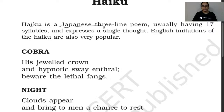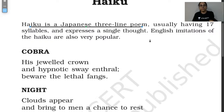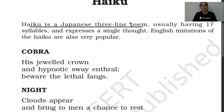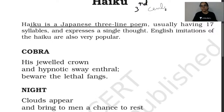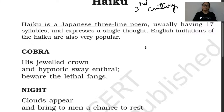Haiku is a Japanese three-line poem, usually having 17 syllables and expressing a single thought. English imitations of the Haiku are also very popular. Haiku is a Japanese poem; it started in the 3rd and 4th century Japan. It is a form of poetry called Haiku.